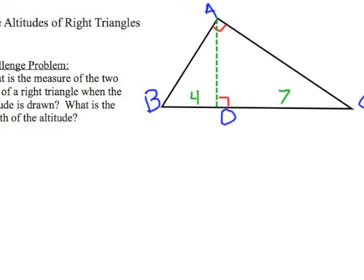BD is 4 and DC is 7. So the question is, what's the measure of the two legs of the right triangle when the altitude is drawn and what is the length of the altitude? I'm going to call the altitude X. We're going to be solving for that. I'm going to call one leg AB Y and I'm going to use the variable Z for the other leg AC.